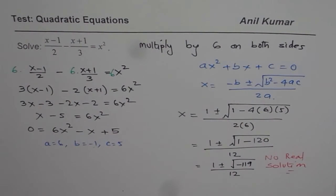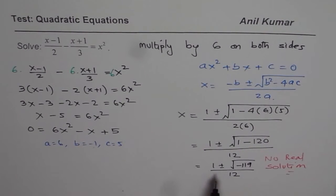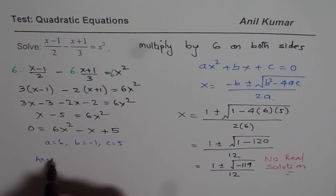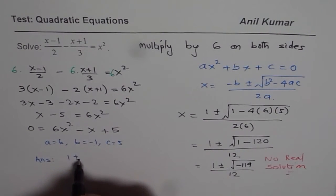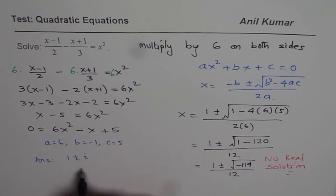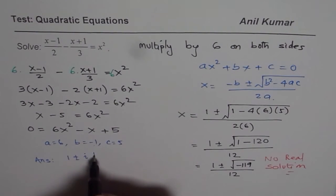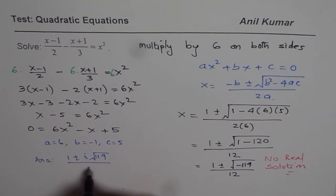Now those of you who are working with imaginary numbers can write down the solution for this. For them, the answer will be 1 ± i√119 divided by 12, where i is the square root of minus 1.